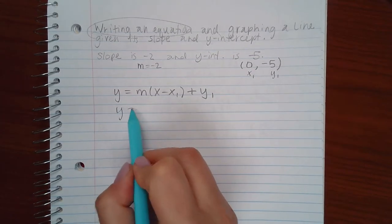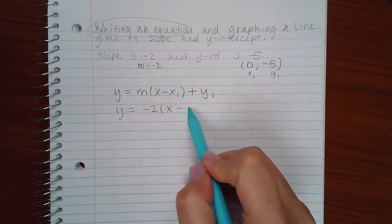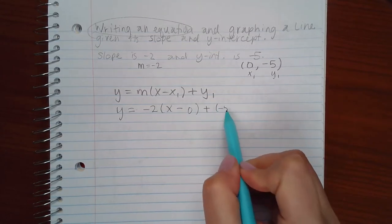So if I plug in all the values, m is negative 2, x1 is 0, and y1 is negative 5.